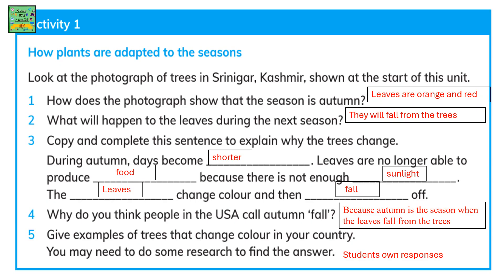Why do you think people in the USA call autumn 'fall'? Because autumn is the season when the leaves fall off the trees. Give examples of trees that change color in your country. You may need to do some research to find the answers, and it's your own response.